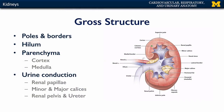Urine is conducted down collecting ducts that go through the medulla and end at the renal papillae. These renal papillae are surrounded by areas called minor calyces, which receive the urine from the collecting ducts. That urine then flows from the minor calyces into the major calyces. Generally, kidneys have two to three major calyces, and then the major calyces coalesce into the renal pelvis, which feeds into the ureter.